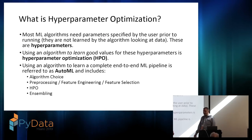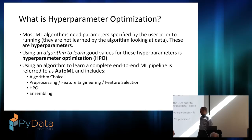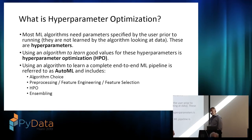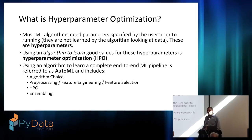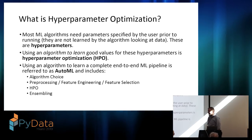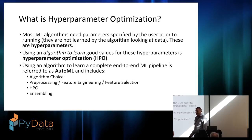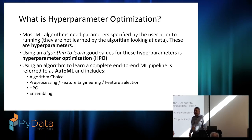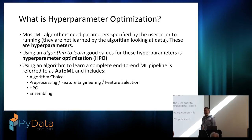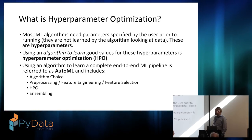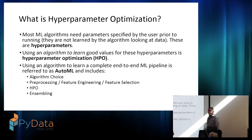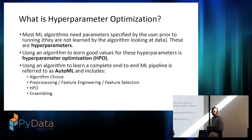So what is hyperparameter optimization? Most ML algorithms have something that needs to be specified before you can actually feed it data and let it start learning. These things that have to be specified up front are hyperparameters, and even if you aren't specifying them they're usually there, perhaps set to default. So using an algorithm to choose those hyperparameters is hyperparameter optimization, or HPO.